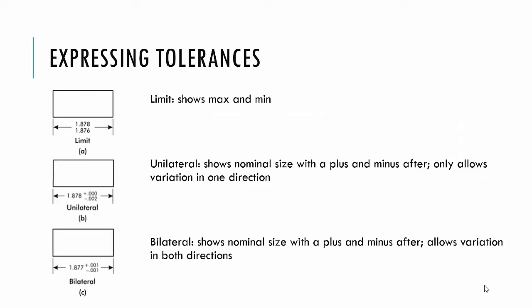Expressing tolerances can be done in a couple of ways. You can do limits where you show the max and the min. You can do unilateral, and you can do bilateral. The limits on top there on the left show your max and your min. What I don't know there is what is the nominal size. I only know my max and my min based on that figure. Unilateral shows the nominal size with a plus and a minus after. A unilateral variation or tolerance only lets there be variance in one direction. So you'll see that for this, 1.878, it's plus 0.000, so it can't be any bigger than that. It could be 2 mils smaller than that, minus 0.002.